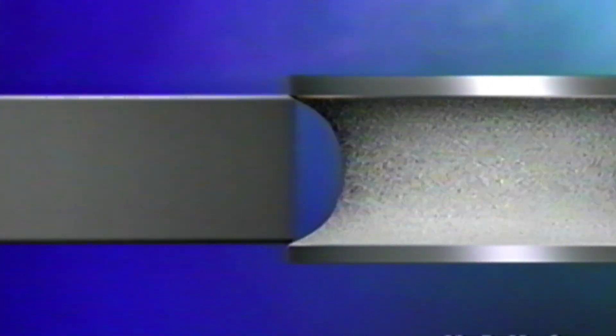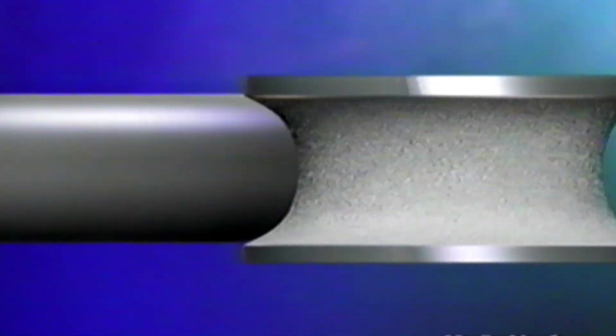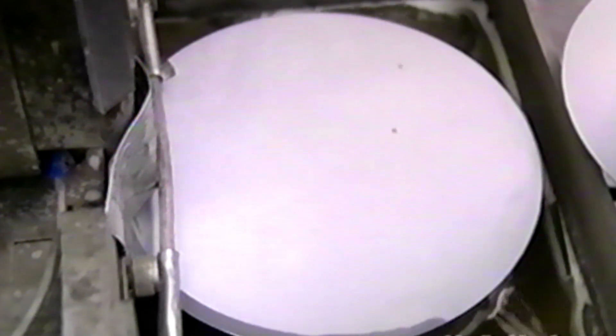After the sawing process, the individual slices have sharp, fragile edges. These edges must be rounded or profiled in order to provide strength to the wafer. This will ultimately prevent chipping or breakage in subsequent processing.